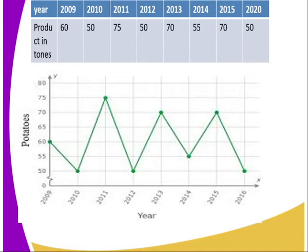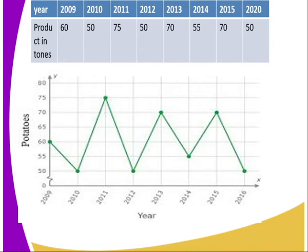Note that is 2016 and not 2020. When it comes to drawing the graph, you are required to draw the X and the Y axis. After that, you get the scale. You can see our independent variable, which is the year, is on the X axis, while the dependent variable, which is the potato production, is on the Y axis. For the X axis, we take every year starting from 2009 to 2016. For the potatoes, we take the lowest and the highest — the lowest is 50 and the highest is 70 — so we choose a scale that will accommodate all values.